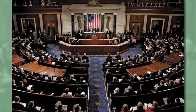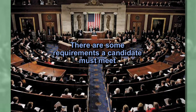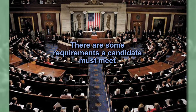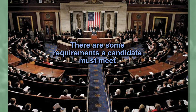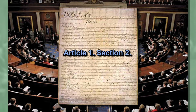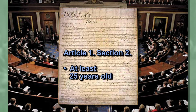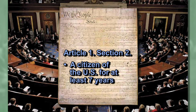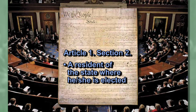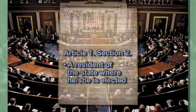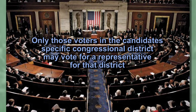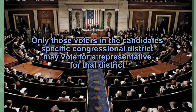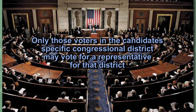To be elected to the House of Representatives, there are some requirements a candidate must meet. These qualifications are established in Article 1, Section 2 of the Constitution. A candidate must be at least 25 years old by the time he or she takes the oath of office, a citizen of the U.S. for at least seven years, and a resident of the state from which he or she is elected. Only those voters in the candidate's specific congressional district may vote for a representative for that district.